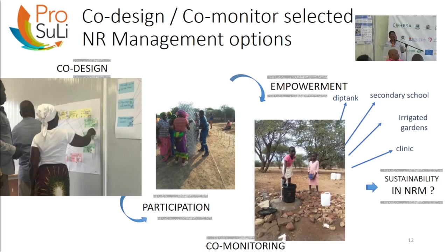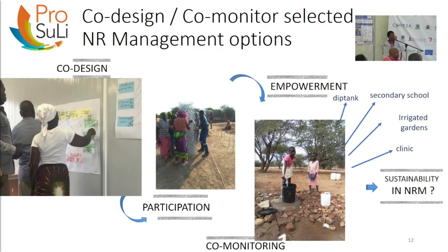In terms of co-design and co-monitoring of selected natural resources management options, the co-design process with communities was central — taking over one year of the four-year project, reflecting its importance. This was followed by community participation in developing actions and empowerment through provision of water, which supplied deep tanks used to control ticks causing diseases in cattle and other animals, as well as water for school children, irrigated gardens, and a clinic serving pregnant mothers-in-waiting. Co-monitoring and sustainability efforts were also part of the process.